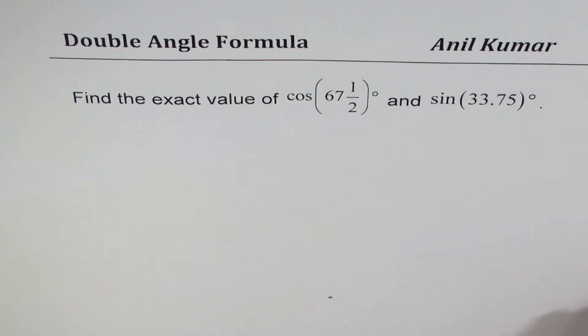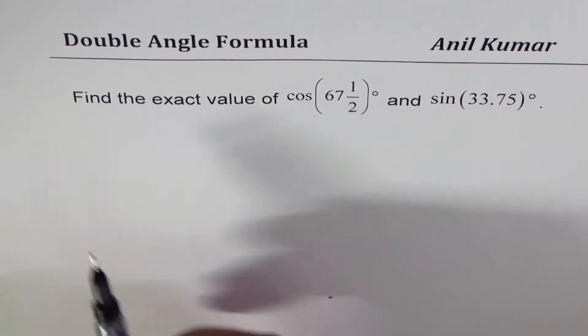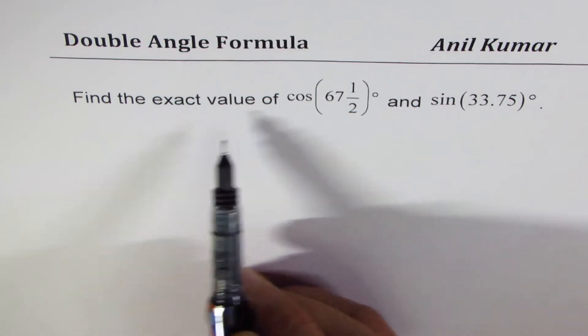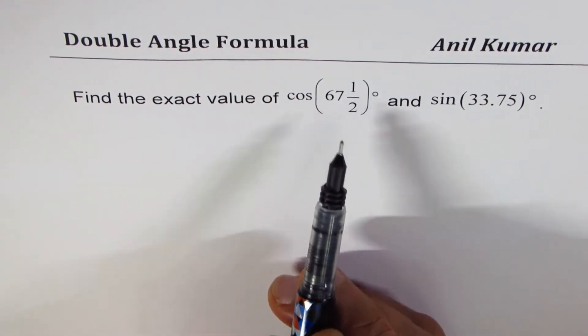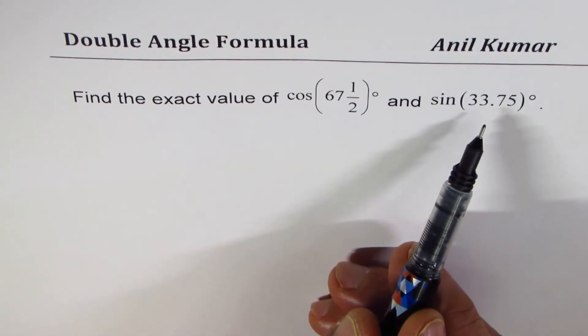I'm Anil Kumar and in this video we'll explore application of double angle formula twice. The question here is find the exact value of cos 67.5 degrees and sin 33.75 degrees.